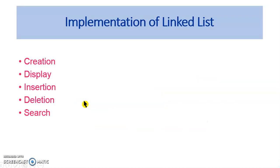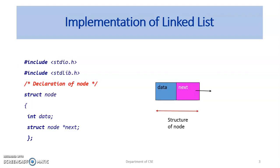In this video, we will see the implementation of creation of linked list, insertion, display, deletion and search operation of the linked list. The very first step in the implementation of the linked list is declaration of the structure of node. This slide shows how a node is declared using the keyword struct. The struct node consists of two elements: the data element which is of data type int, and the pointer element star next which is of data type struct node. This diagram shows you the structure of the node.